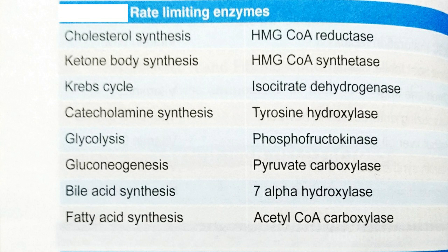For the Krebs cycle, isocitrate dehydrogenase is the rate-limiting enzyme. For catecholamine synthesis, the rate-limiting enzyme is tyrosine hydroxylase. For glycolysis, the rate-limiting enzyme is phosphofructokinase. For gluconeogenesis, the rate-limiting enzyme is pyruvate carboxylase.